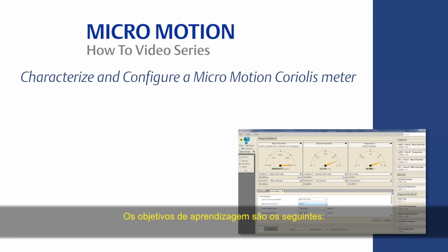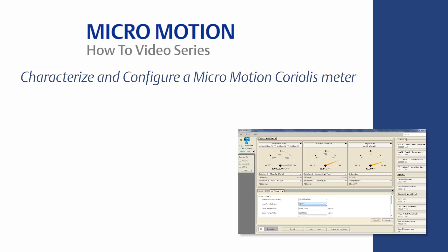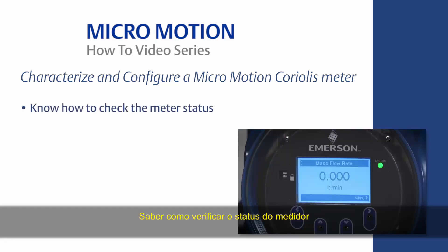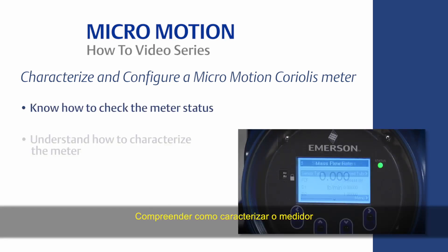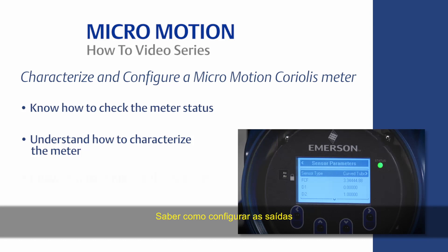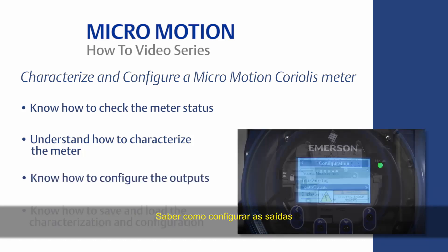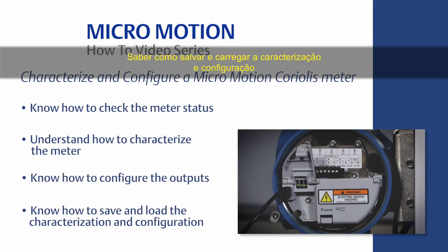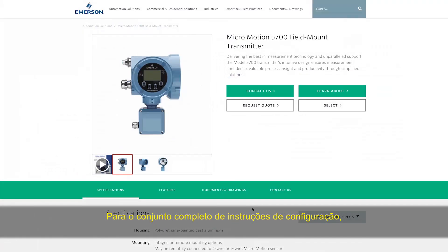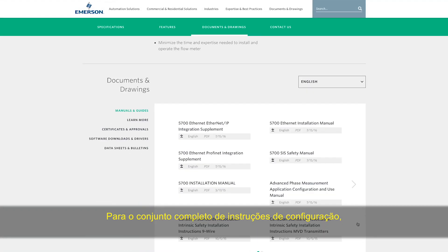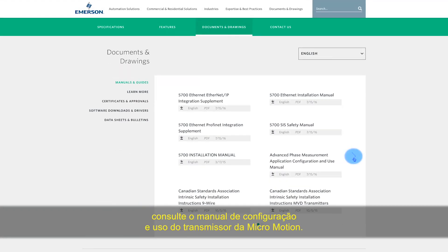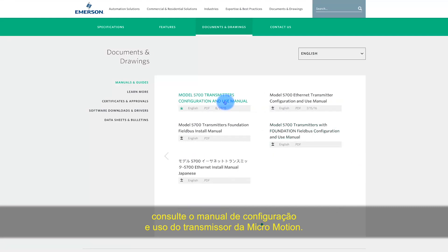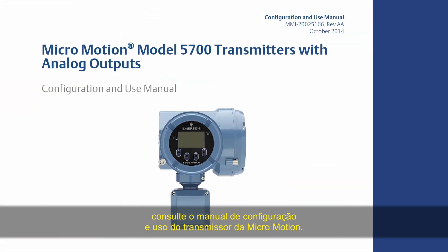The learning objectives are the following: know how to check the meter status, understand how to characterize the meter, know how to configure the outputs, and know how to save and load the characterization and configuration. For the complete set of configuration instructions, please refer to the MicroMotion Transmitter Configuration and Use Manual.